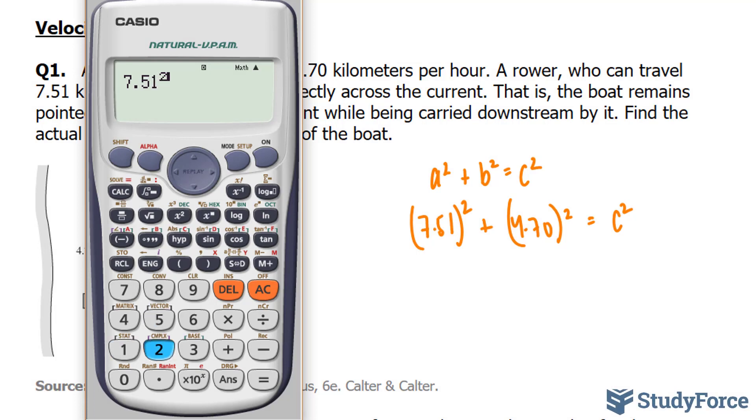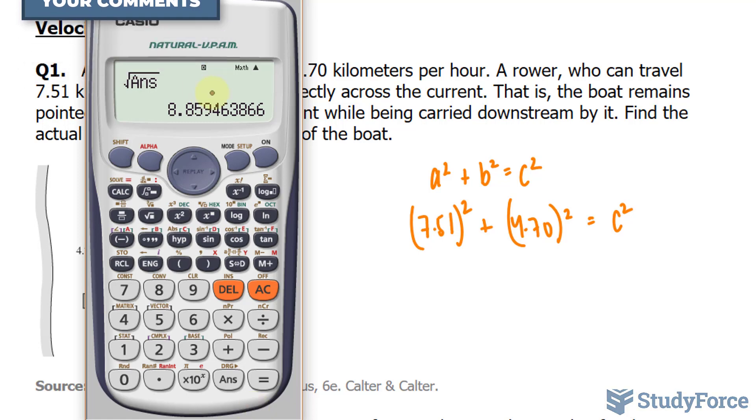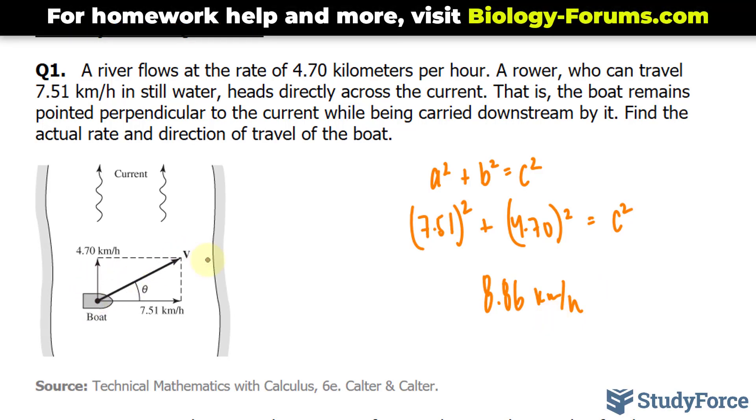7.51 raised to the power of 2 plus 4.70 raised to the power of 2. We'll square root both sides and make sure that our answer is three significant figures. Everything after this 5 is insignificant, but since the number following 5 is a 9, this gets rounded up. So we're left with 8.86. This means that this traveler is moving in this direction 8.86 km per hour.